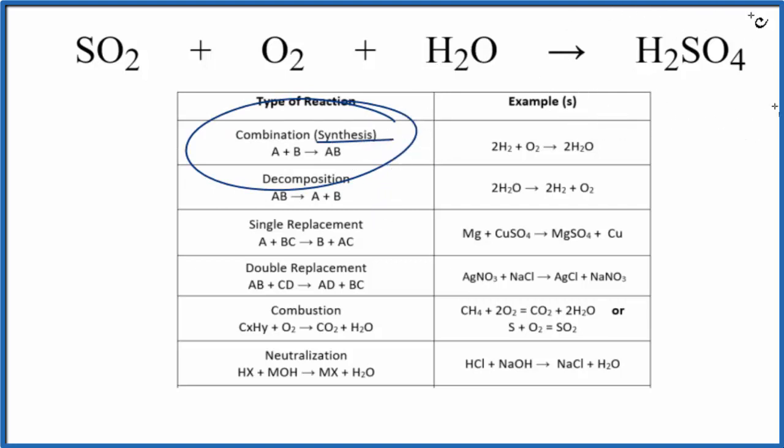So you synthesize a new compound, one new compound here. It has the general form of A plus B yields AB. However, here we have three different substances. So since three substances are combining, it's still considered synthesis or combination because they're combining into one substance.